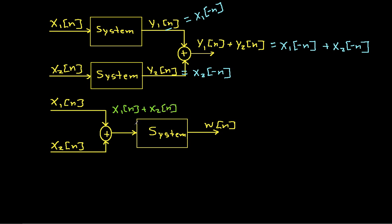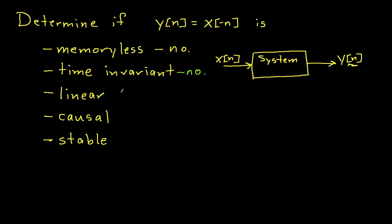And all my system does, all the system does to get an output is change the sign of the n's. Now in this case, since I've got a sum going in, I'll have a sum coming out with each of these n's changed in sign. So this will be x1[-n] plus x2[-n]. And you can see that this guy and this guy are the same. So the system does satisfy additivity. So it satisfies both additivity and homogeneity, which means I can go back to my list here and say, yes, the system is linear. So it's not memoryless and not time invariant, but it is linear.